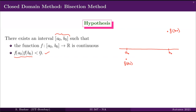Let us take the first case that f(a₀) < 0 and f(b₀) > 0. Then the product is obviously less than 0, and hence we can find a point, say r, such that f(r) = 0 — that is the intermediate value theorem. Our interest is to find an approximate value of the number r, so let us develop the method to approximate the root r.